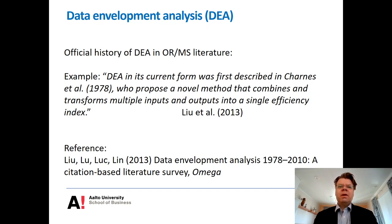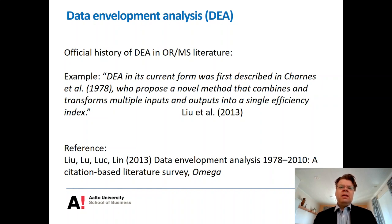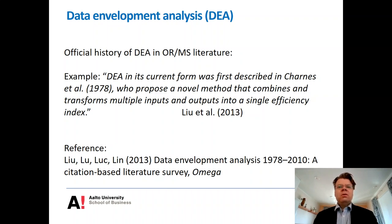Here is one citation-based literature survey of DEA from a historical perspective, but there are several other surveys of the DEA literature. Typically all of these historical treatments of DEA take the Charnes, Cooper and Rhodes 1978 article as the starting point. If you compare this to the Bible, then in some sense the history of DEA is like a New Testament. In this lecture, I will try to consider the Old Testament — what happened before Charnes, Cooper and Rhodes.